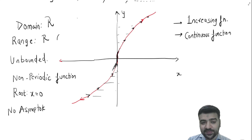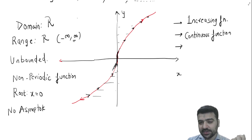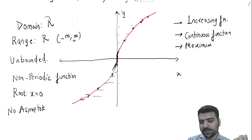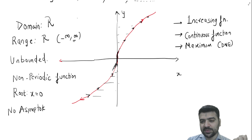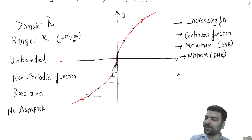The range is minus infinity to infinity, so the maximum does not exist and the minimum does not exist. The same properties can be written for x to the power half, x to the power one by four, x to the power one by six, and so on.